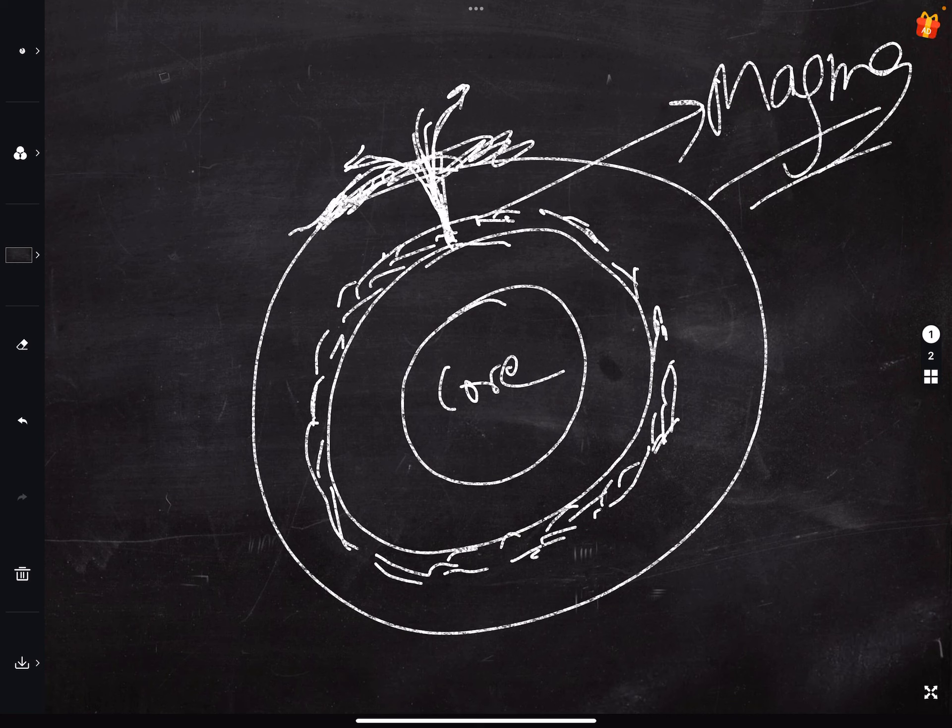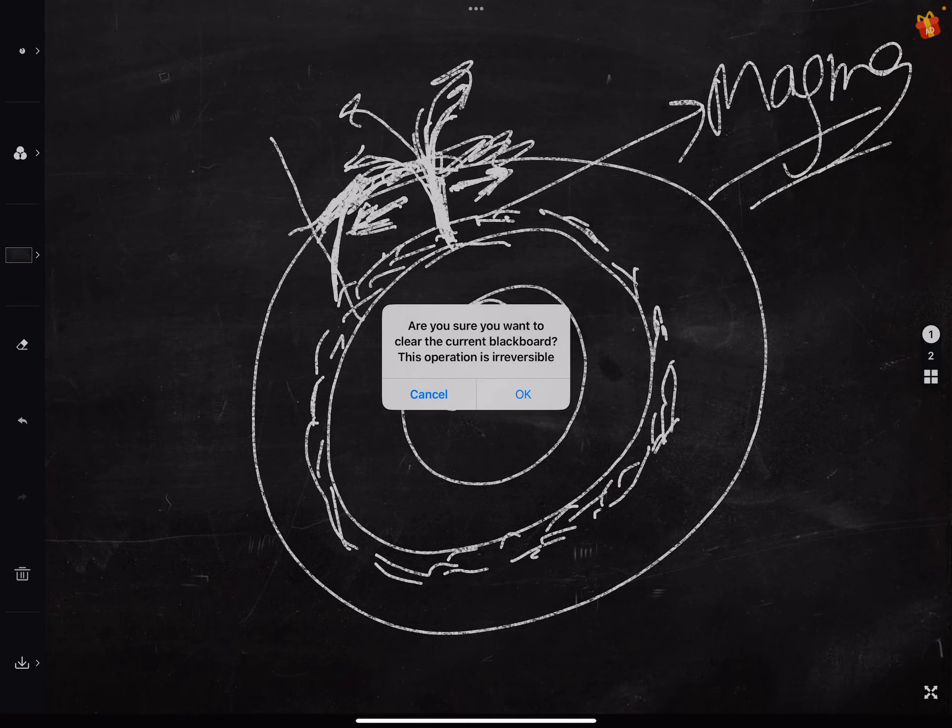We know that the crust is divided into many plates. When this magma is coming out, the plates are diverging. They will move away from each other. And when these plates will move away from each other, we know that there is some subduction of the plate. I will explain this more clearly.